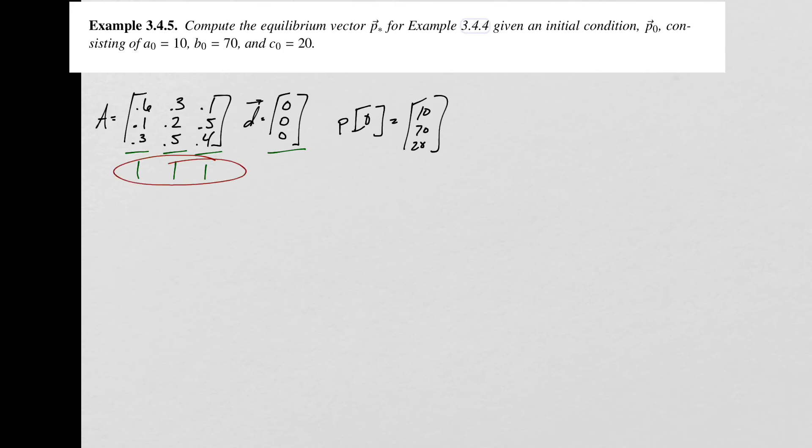When we did this row reduction in the previous problem, we found out that we got an augmented matrix that looked like this. What this augmented matrix tells us is that this row of all zeros tells us there's infinitely many solutions, but it also tells us there's this redundant equation that adds nothing of value when we're trying to solve this problem. Since we know nothing's ever leaving the system, there's always going to be 100 people in there.